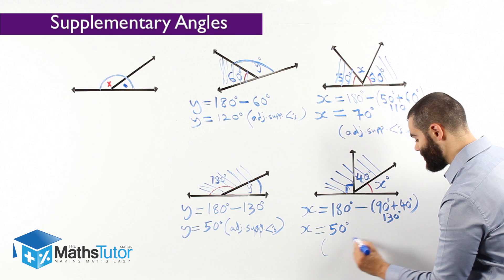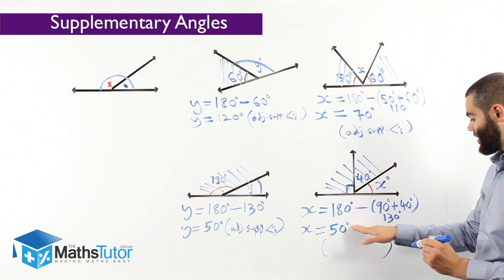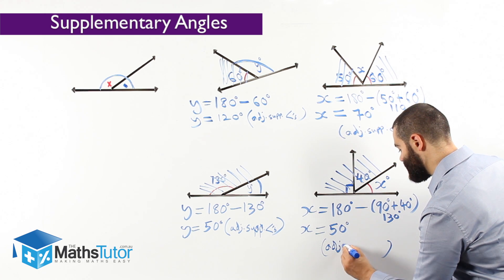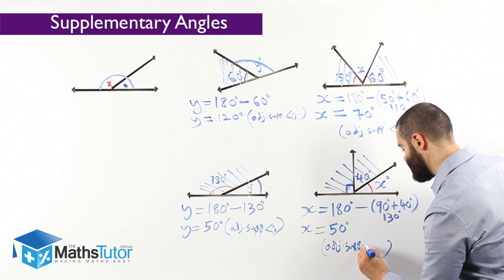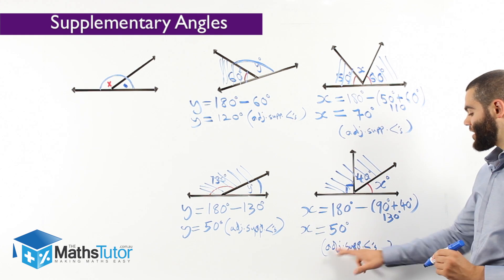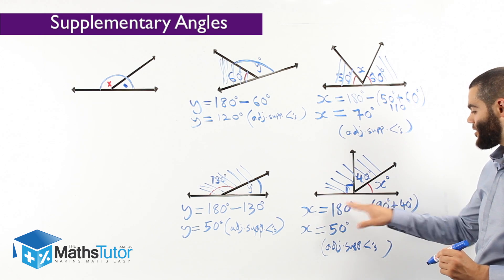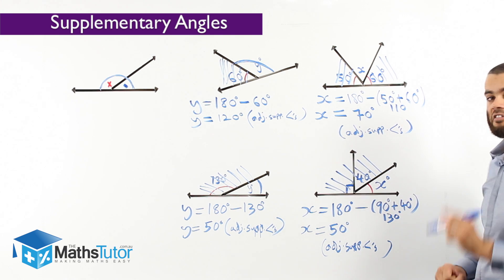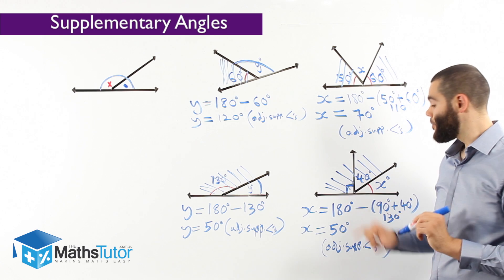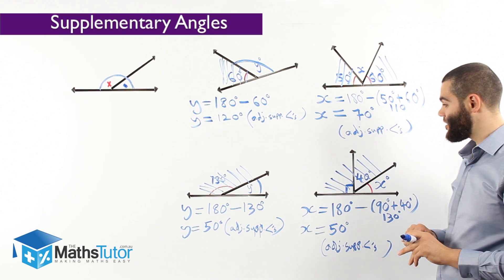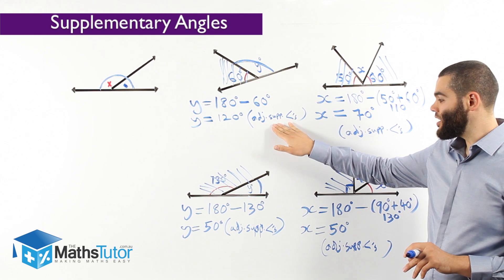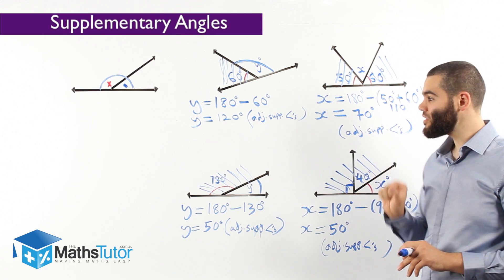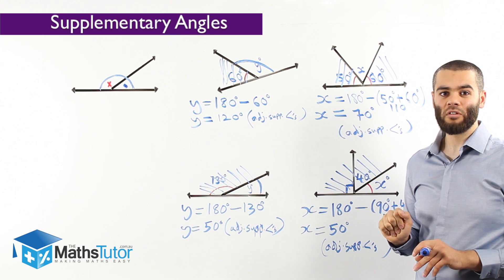Our reason, normally written next to the answer, is adjacent supplementary angles. As you can see: 180 minus the 90 and the 40, we're left with x. Be careful — the 90 is there even though there's no number written, because the right angle symbol means it is 90 degrees. The reason is sometimes more important than the actual answer. Always show the answer and the reason — it's critical. Without that, you're going to lose marks, maybe even get it wrong altogether.